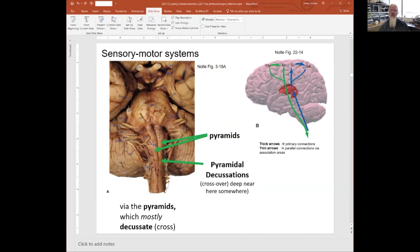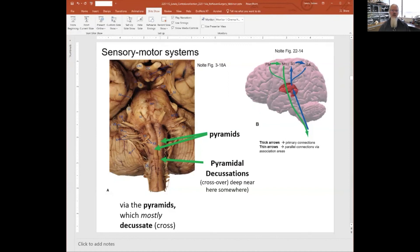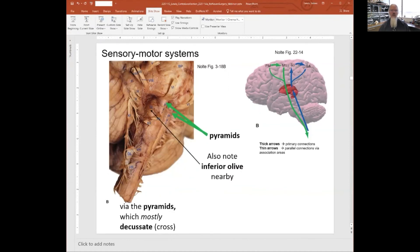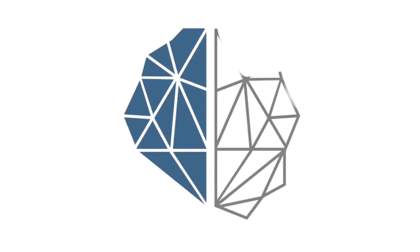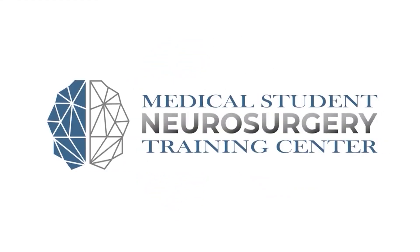Here are those pyramids again, and here's the inferior olive—some neuroanatomy to give you flashbacks to when you learned this stuff, or when you'll be learning it in upcoming years.